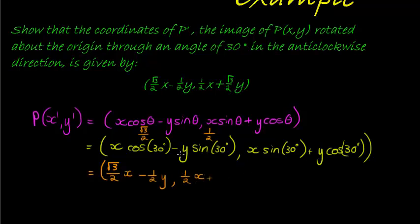x plus y is square root, sorry, cos of 30 is square root 3 over 2, y. And there we go. I've got what they asked me to do. I must show that and I'm done. And that's it for this question. See you in the next one.